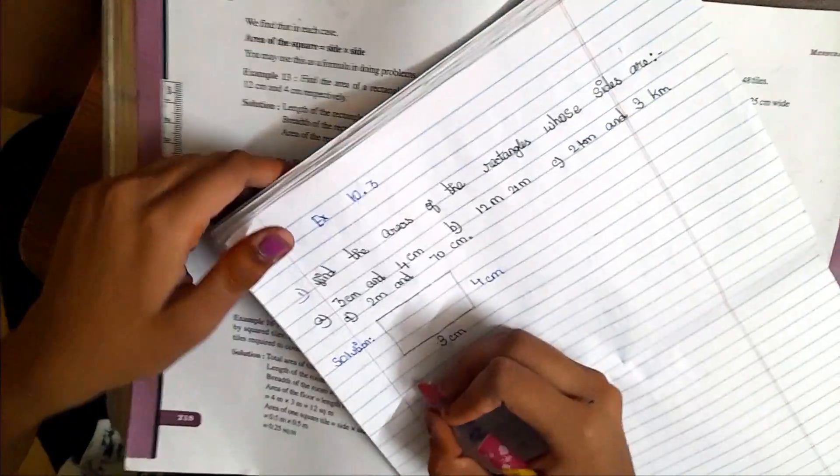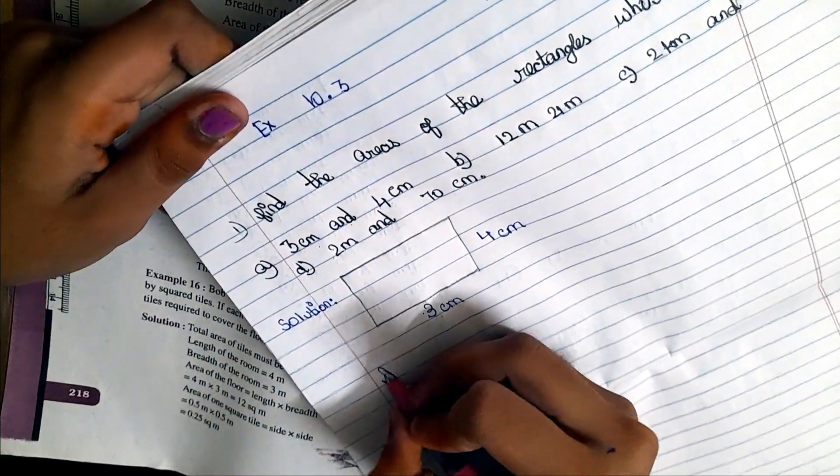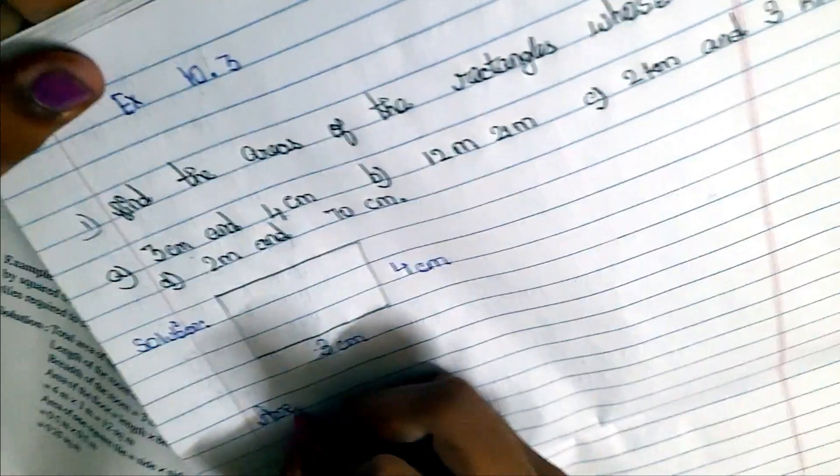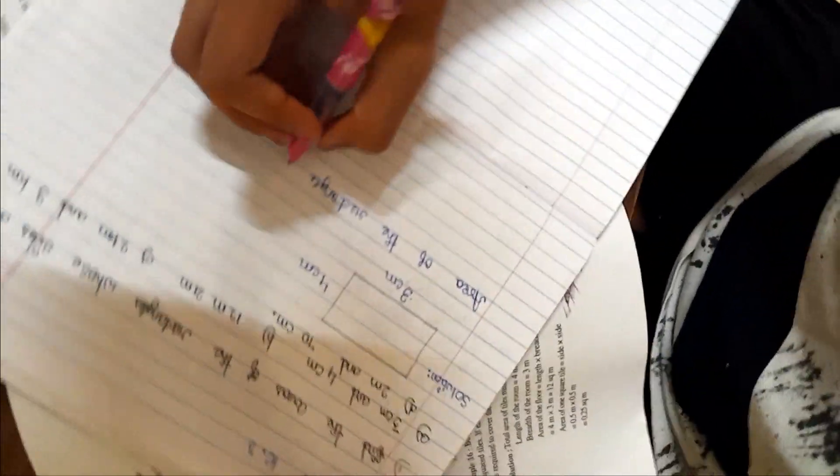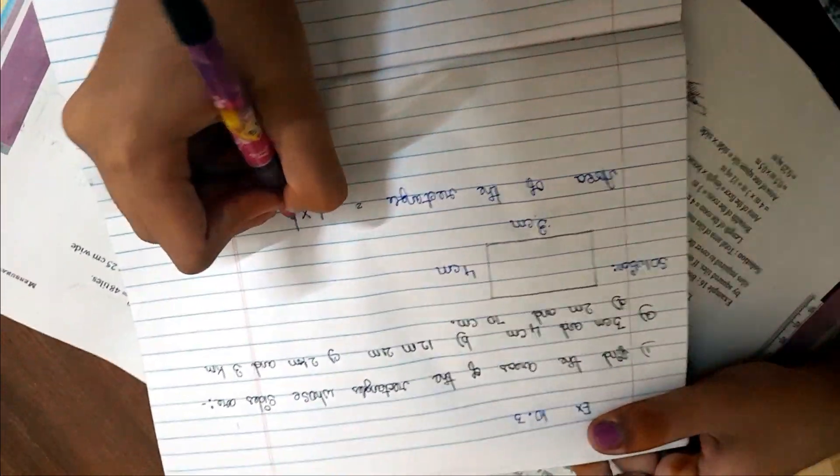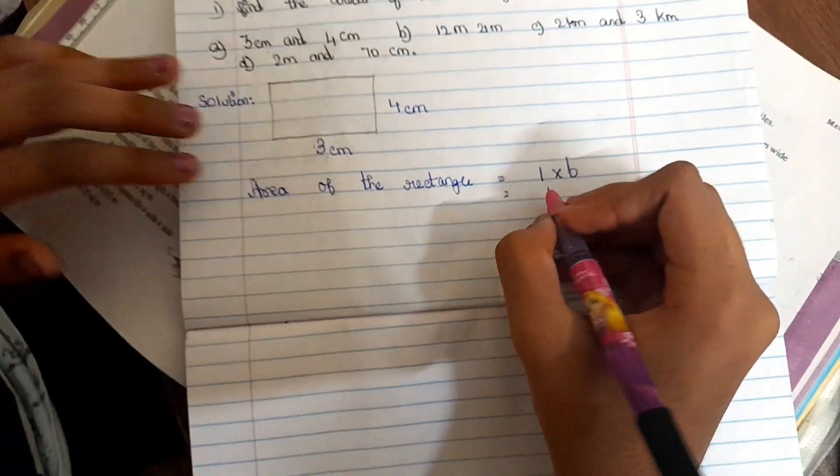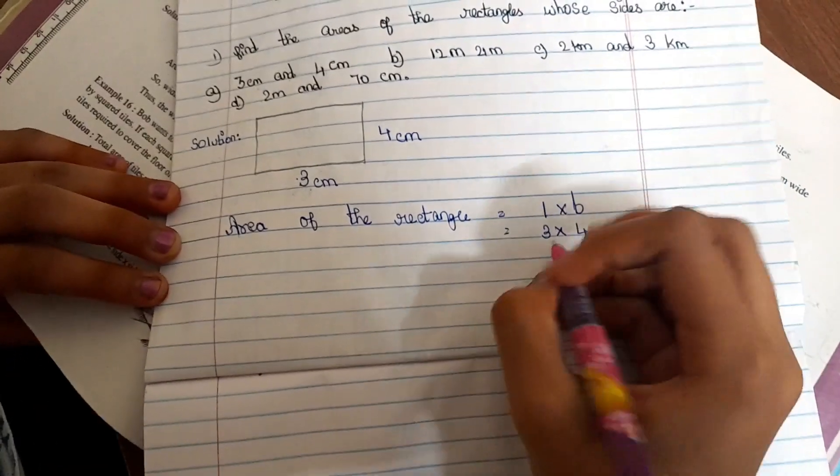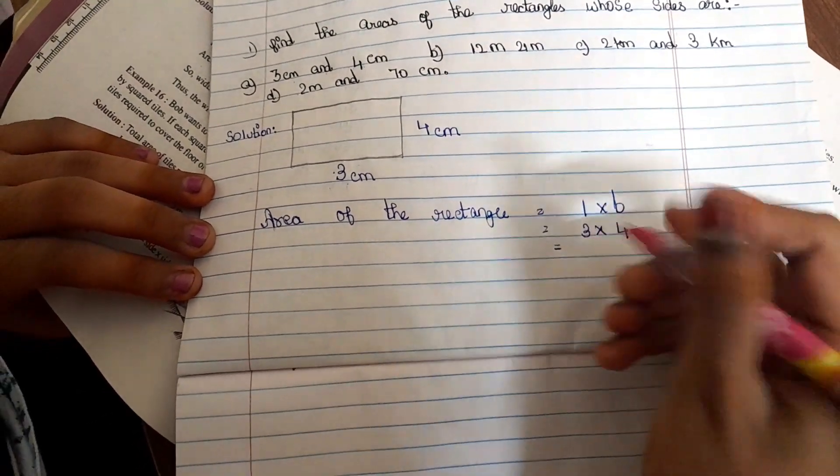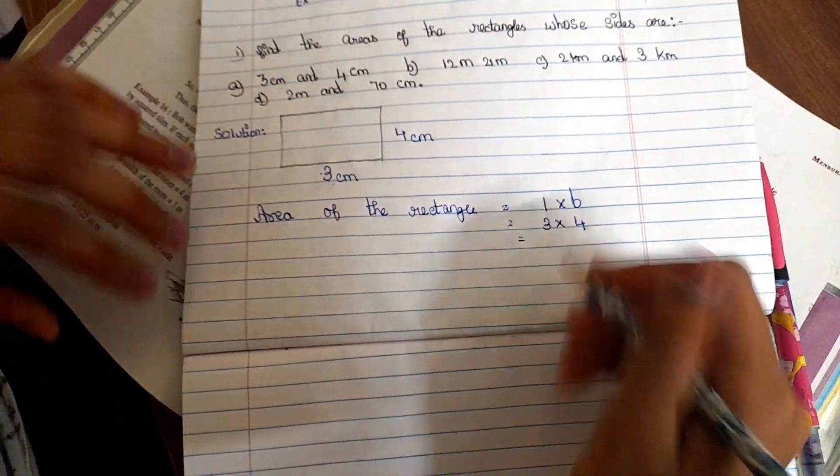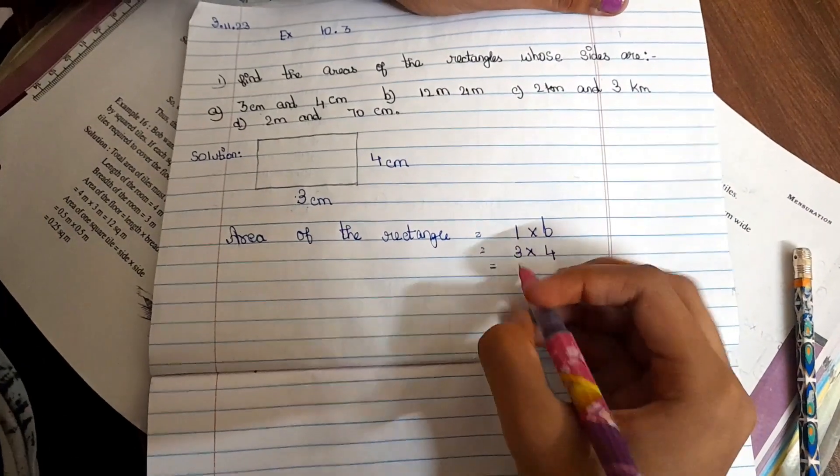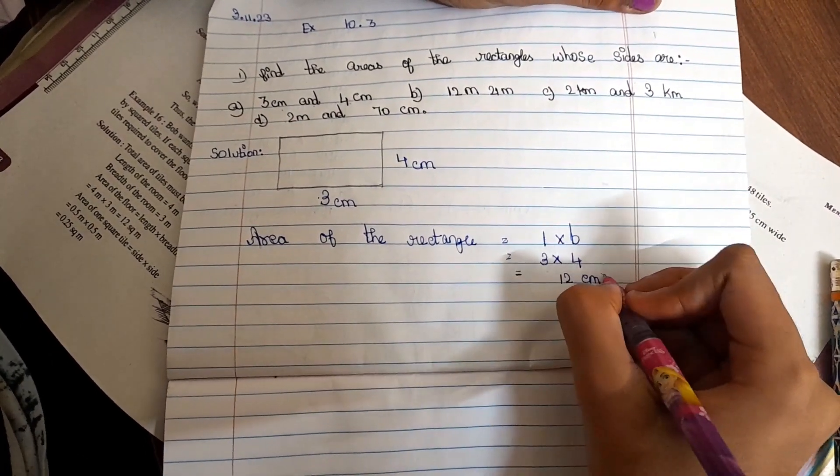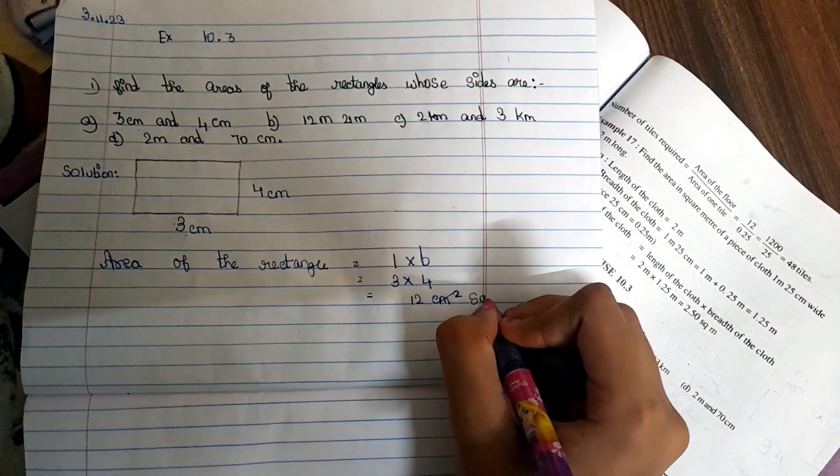Now we are going to write area of a rectangle. The area of the rectangle is L into B. So L into B, 3 into 4. We want to multiply this. 4 3s are 12. So 12 square cm.